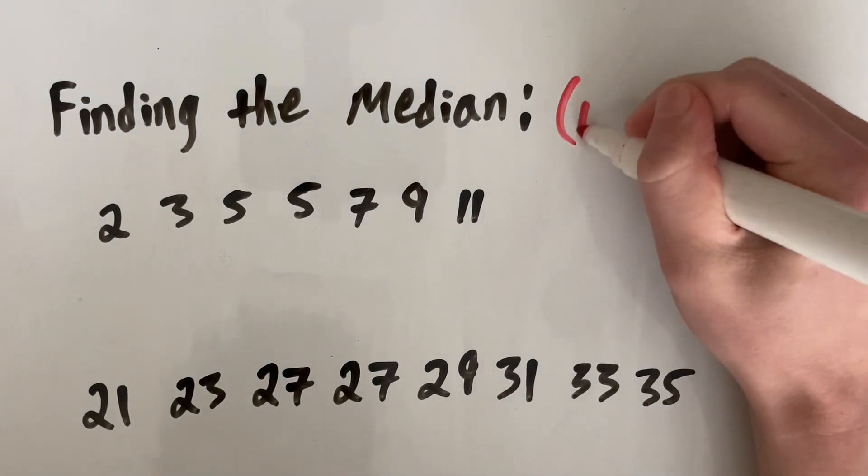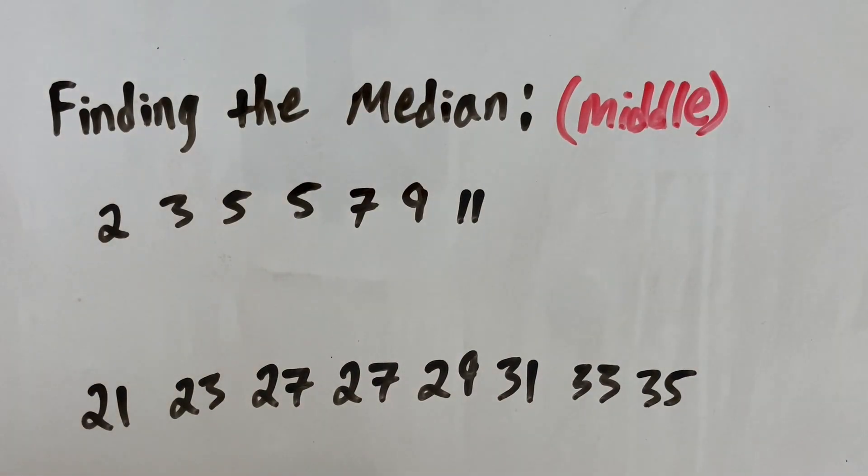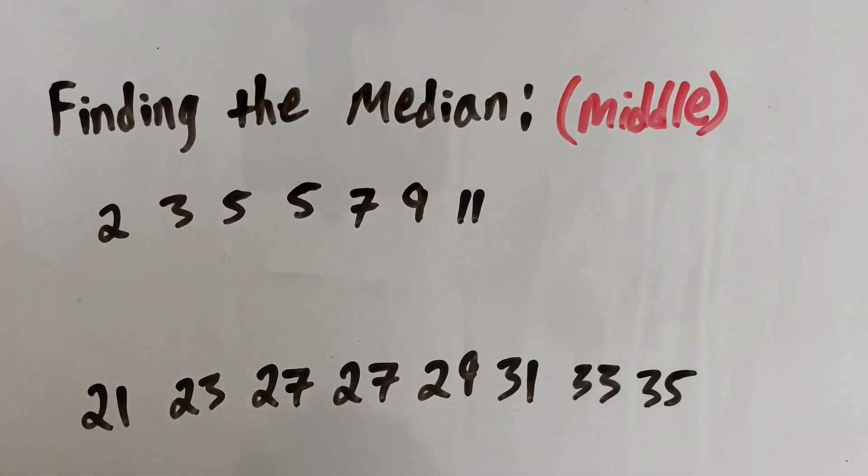So the median is just another way of saying finding the middle, or the middle number. So the first thing you're going to want to do is, with your dataset, order it from smallest to largest.